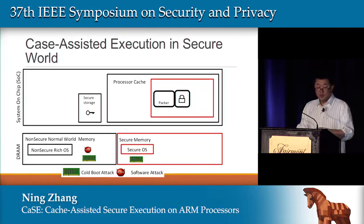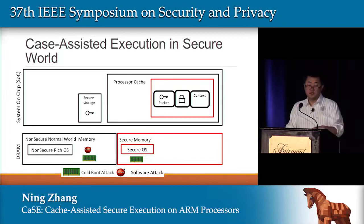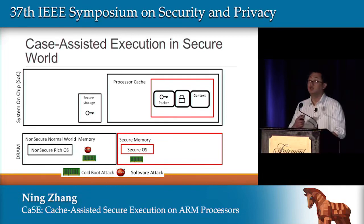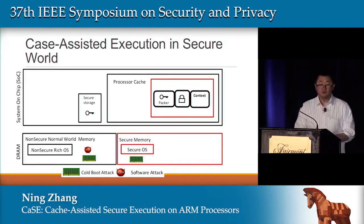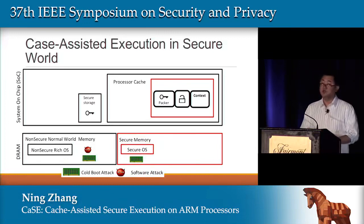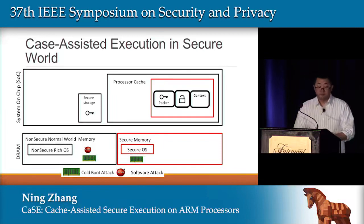In secure mode, applications are encrypted in memory. When they need to be executed, they get loaded into the cache. The key is loaded from secure storage. When the application binary is loaded into cache, so is the application context — including the data segment, code segment, stacks, heaps, and other application context — which we store all inside the cache to protect the entire application execution. The application is then decrypted in-place, and we direct control flow inside the code loaded entirely inside the cache.